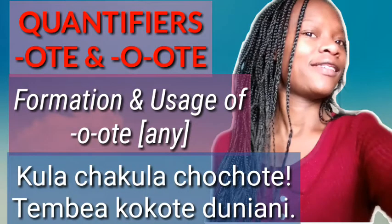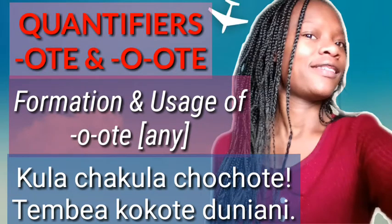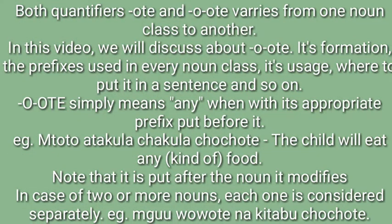Hi, welcome to Swahili Kingdom. Today we are learning about the quantifiers Ote and Oote. Oote simply means 'any.' Both quantifiers Ote and Oote vary from one noun class to another. In this video, we will discuss Oote: its formation, the prefixes used in every noun class, its usage, where to put it in a sentence, and so on. Oote simply means 'any' when used with its appropriate prefix.